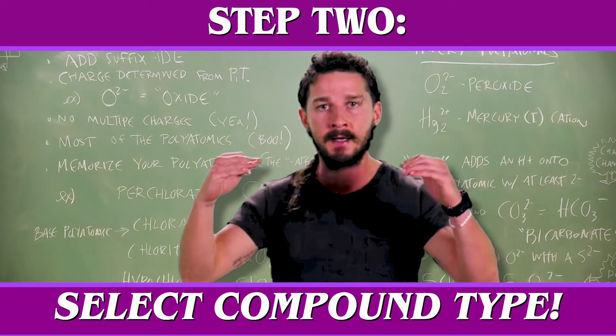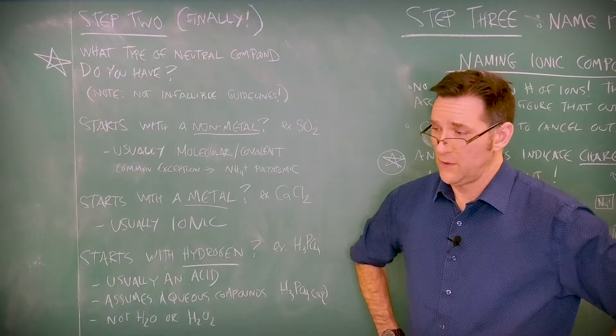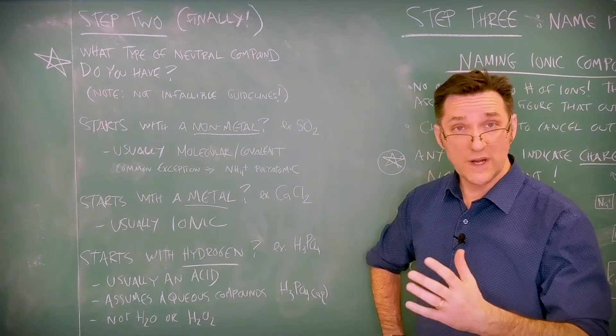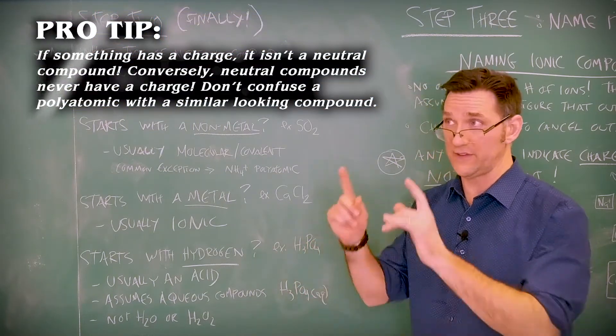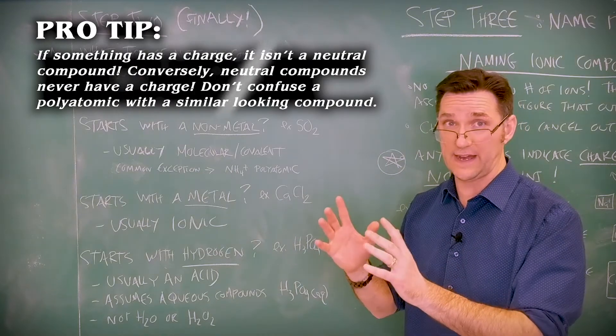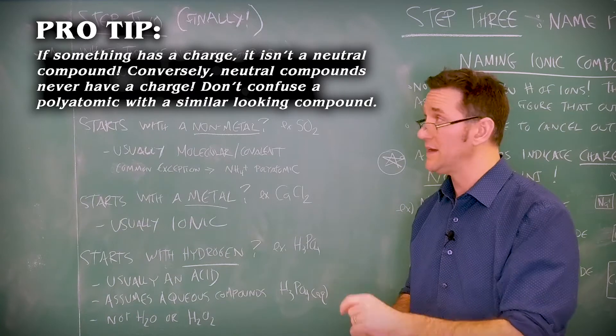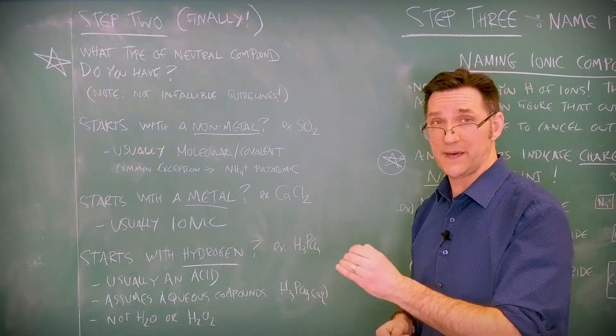You know what I'll do after this is I'll share my own common ion chart with you. That was a lot of time on ions, but it's time well spent. Once you have a neutral compound, not an ion, if you see a superscript, that's a charge, that's an ion, it's not a compound. But if there is no charge, it's a neutral compound.